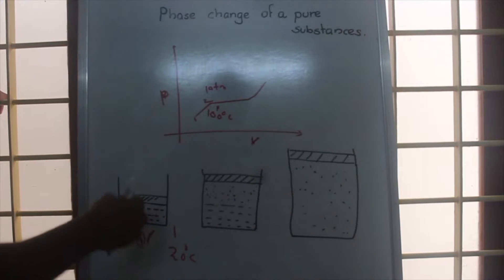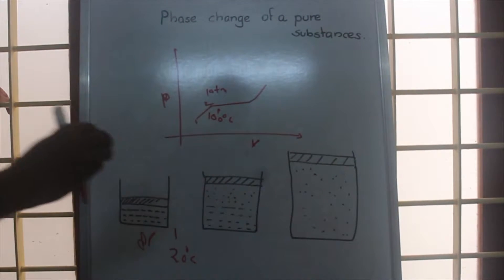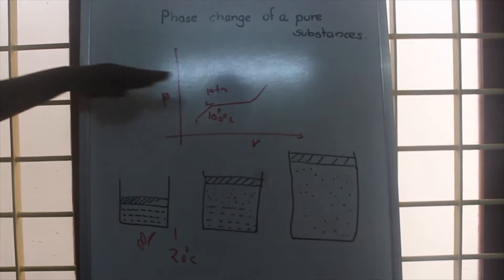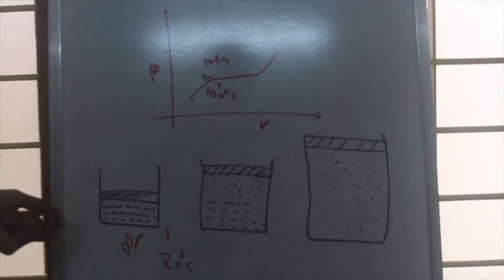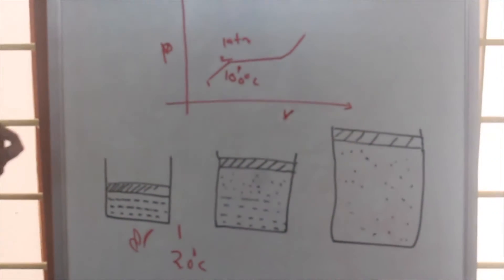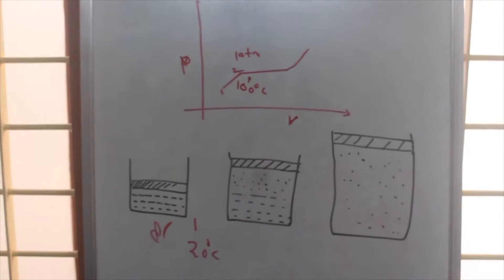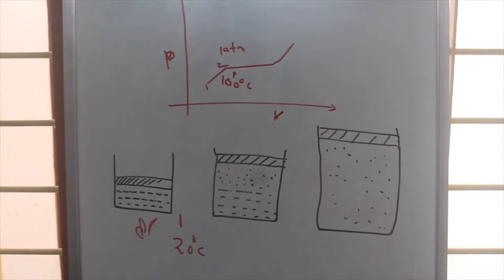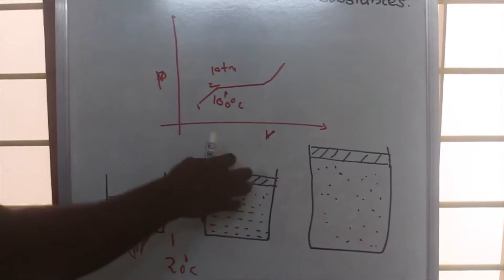Even if we supply heat after that, the pressure will not change, the pressure will remain at one atmosphere. But in the previous case from one to two, there was an increase in pressure. But after reaching 100 degrees Celsius, the pressure will remain at one atmosphere and there will be a phase transition, that is the water will change into vapor.